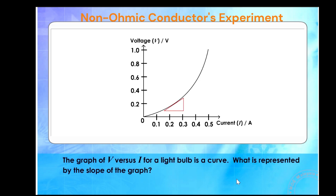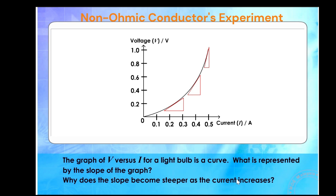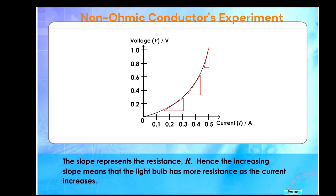The graph of V versus I for a light bulb is a curve. What is represented by the slope of the graph? Why does the slope become steeper as the current increases? The slope represents the resistance R.